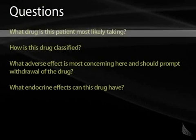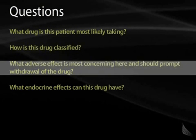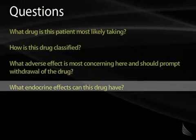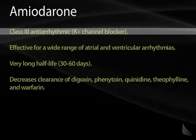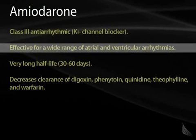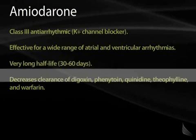What drug is this patient most likely taking? How is this drug classified? What adverse effect is most concerning here and should prompt withdrawal of the drug? And what endocrine effects can this drug have? This patient is taking amiodarone for his arrhythmia. This is a class III antiarrhythmic — a potassium channel blocker. It is very effective for a wide range of atrial and ventricular arrhythmias and has a very long half-life of 30 to 60 days.